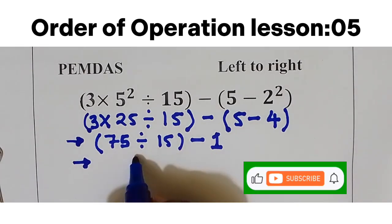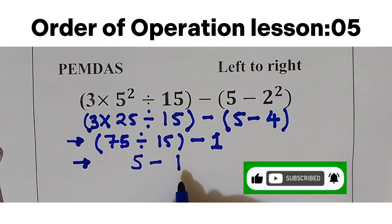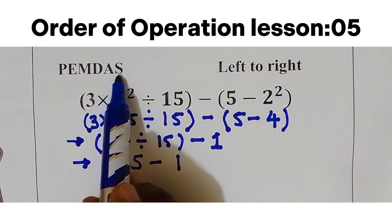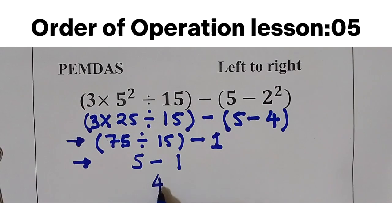Take away 1. Let's finish with subtraction here. That is going to be 5 take away 1. We get our answer equal to 4.